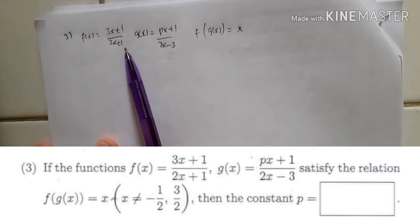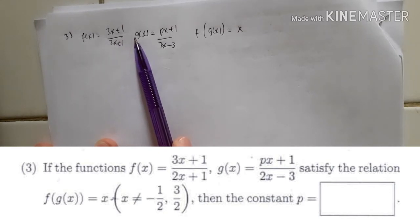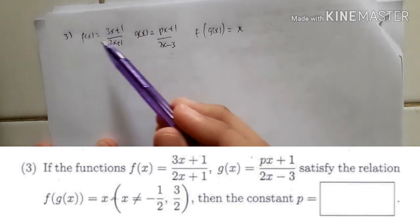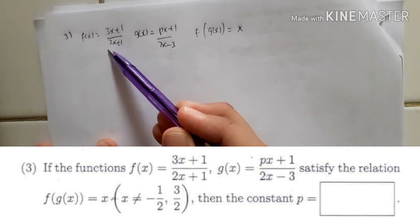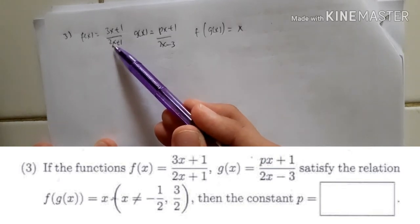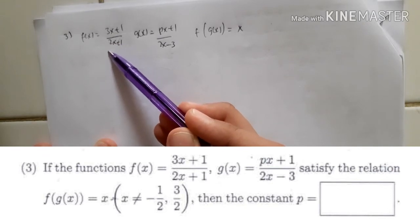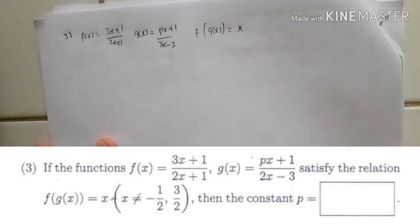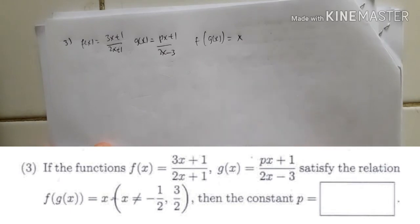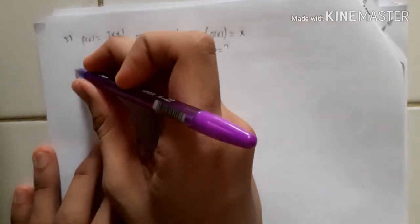You can see that if you substitute minus half: two times minus half is minus one, plus one is zero — so the denominator becomes zero, which is why that value is excluded. That's just a term you ignore. Now we need to find p.